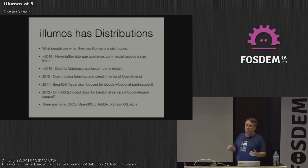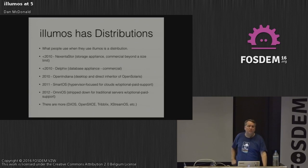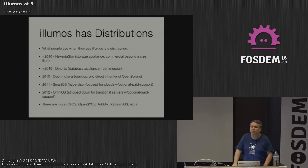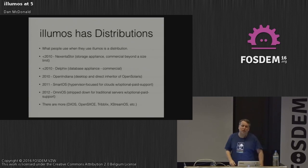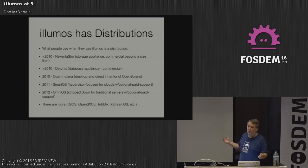In 2010, right after Illumos was announced and after the email talking about the closing of OpenSolaris leaked, all of the OpenSolaris stuff got cloned and rebranded as OpenIndiana. If you see anybody at our booth using Illumos on a desktop, it's OpenIndiana. In 2011, Bryan Cantrill and his colleagues at Joyent — Bryan left Sun early 2010 before it actually closed — formed the hypervisor-focused SmartOS distribution, because they do everything in zones or containers, as some people call them.